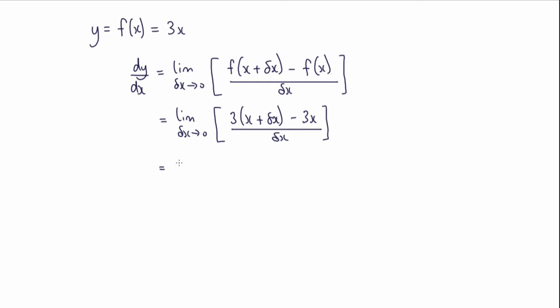So we have the limit as delta x tends to 0 of, let's expand this bracket here. So we've got a 3x plus a 3 delta x minus the original 3x all over delta x.